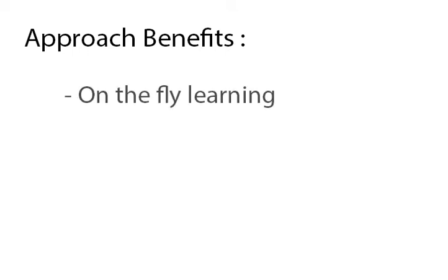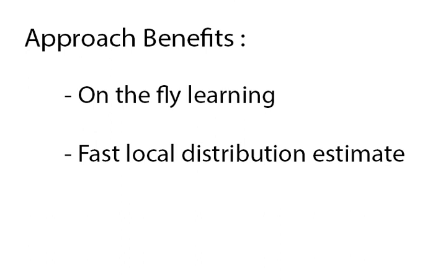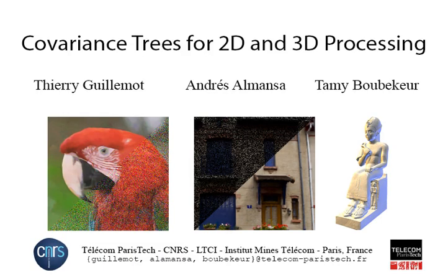The covariance tree structure we just introduced provides several key benefits: on-the-fly learning, which allows streaming additional data points for a constant memory budget; fast local distribution estimates at different scales without recomputing the data structure; and genericity, allowing it to solve various 2D and 3D problems. Thank you for watching our video on covariance trees for 2D and 3D processing.